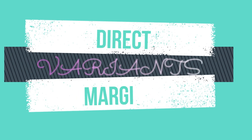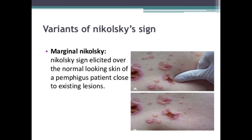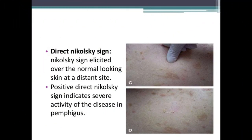The next variants are marginal and direct Nikolsky's sign. Marginal Nikolsky's sign is the extension of erosion on surrounding normal-appearing skin by rubbing skin surrounding an existing lesion. Direct Nikolsky's sign is the induction of erosion on normal-appearing skin distant from the lesion. A positive direct Nikolsky's sign indicates severe disease activity in Pemphigus and is the first sign to disappear as the disease responds to therapy, while the marginal Nikolsky's sign may persist for some time.